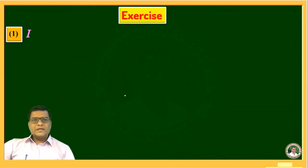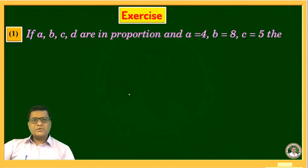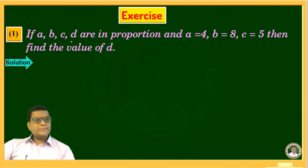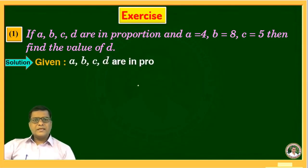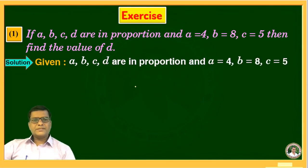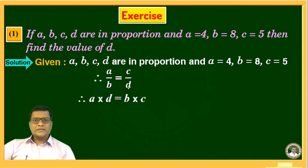Let's see the exercise. The first sum is: if A, B, C, D are in proportion and A is equal to 4, B is equal to 8, C is equal to 5, then find the value of D. Here A, B, C, D are in proportion and the values of A, B, and C are given. First write down the given things: A, B, C, D are in proportion, A equals 4, B equals 8, C equals 5. Therefore A upon B is equal to C upon D, that is A into D is equal to B into C. Substitute the values of A, B, and C.